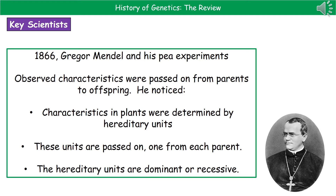He spent a lot of time working with peas, but he did find those three key bits of information: characteristics are determined by hereditary units, those units are passed on one from each parent, and they can either be dominant or recessive.